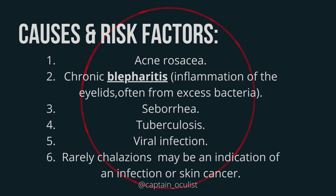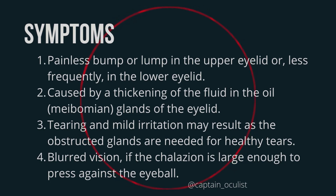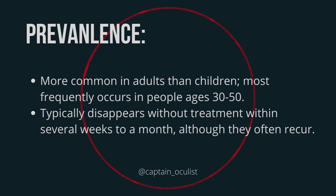Rarely, chalazions may be an indication of an infection or skin cancer. Symptoms include a painless bump or lump in the upper eyelid, or less frequently in the lower eyelid, caused by a thickening of the fluid in the oil meibomian glands of the eyelid. Tearing and mild irritation may result as the obstructed glands are needed for healthy tears. Blurred vision may occur if the chalazion is large enough to press against the eyeball. It is more common in adults than children, most frequently occurring in people ages 30–50, and typically disappears without treatment within several weeks to a month, although it often recurs.